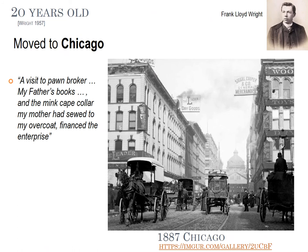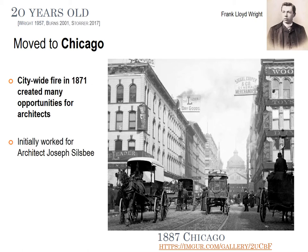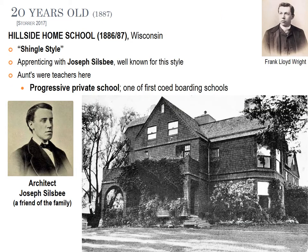Frank Lloyd Wright moves to Chicago when he's 20 years old. He pawns some of his parents' things to get a train ticket. A fire had just happened prior to him arriving, so all the buildings were being rebuilt — there was plenty of work for young architects. He initially works for Joseph Silsby, who he had previously worked with, who was also a friend of the family. His first project is a progressive co-ed boarding school run by his aunts.